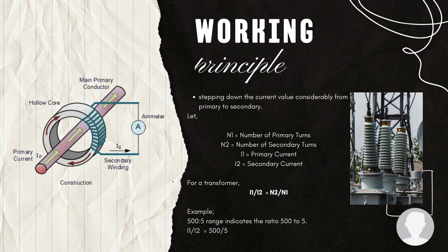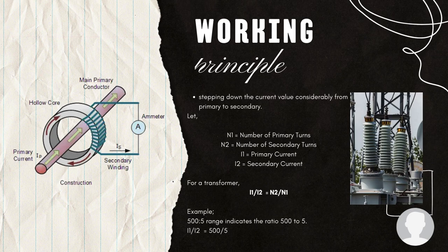Let N1 be the number of primary turns and N2 be the number of secondary turns. Let I1 be the primary current and I2 the secondary current. For a transformer, I1 over I2 equals N2 over N1. As N2 is very high compared to N1, the ratio I1 to I2 is also very high for a current transformer. The current ratio indicates the range of the current transformer. For example, a 500:5 rating indicates the CT steps down the current from primary to secondary by a ratio of 500 to 5.